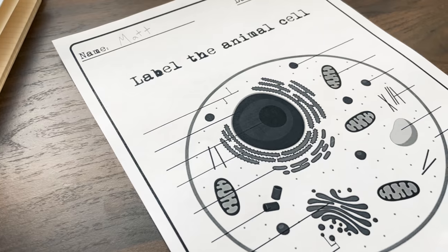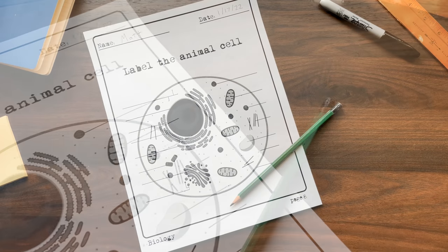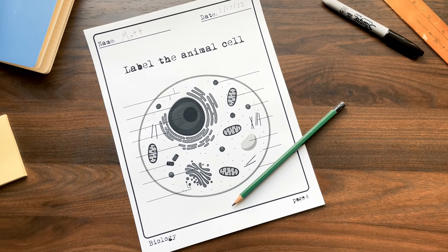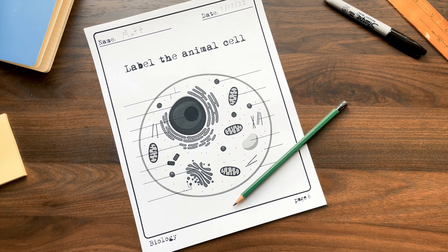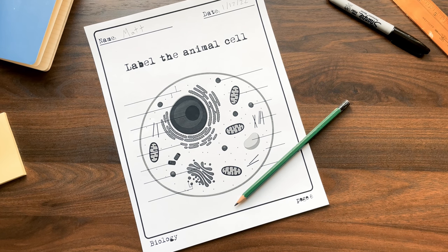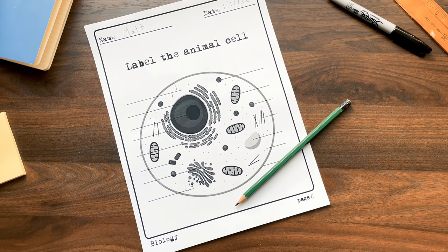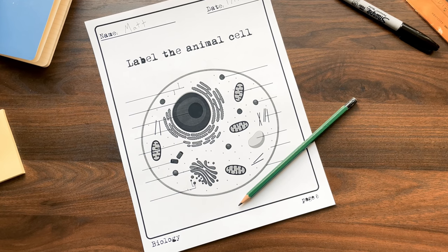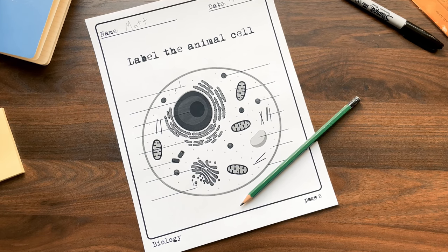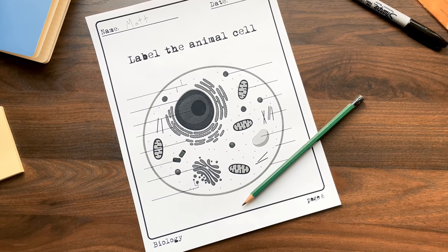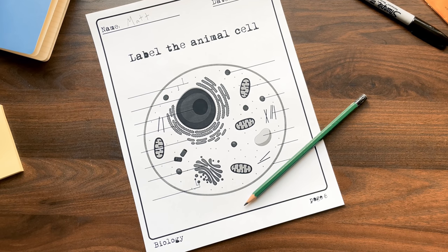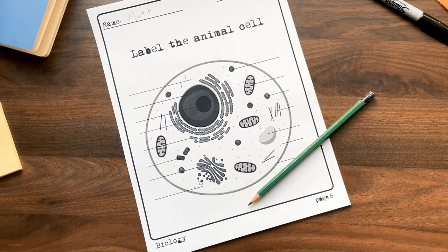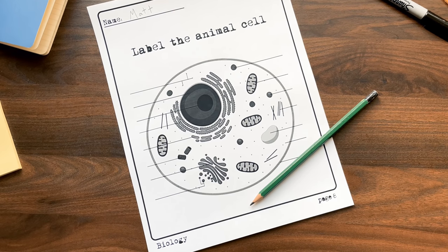If you've taken a biology class, at some point you likely had to sit down to a picture of a cell. It was vaguely oval-shaped and filled with circles and squiggly lines, and your task was to look at those circles and lines and assign them labels, like vesicle or nucleus. And this exercise has its benefits, but at the same time, the picture it paints of a cell is by necessity static and uniform.